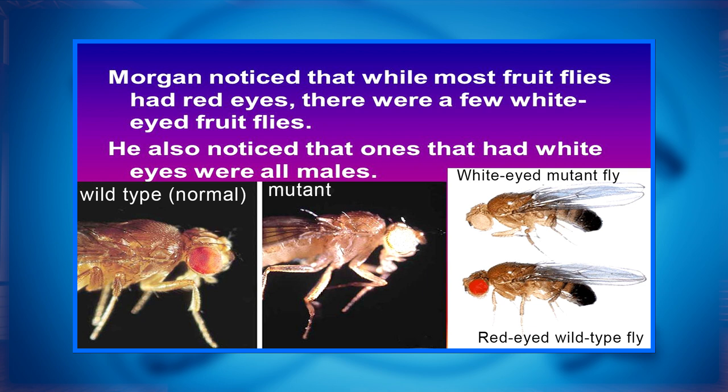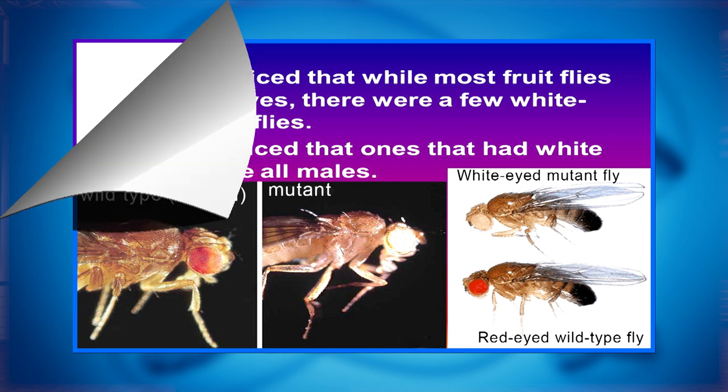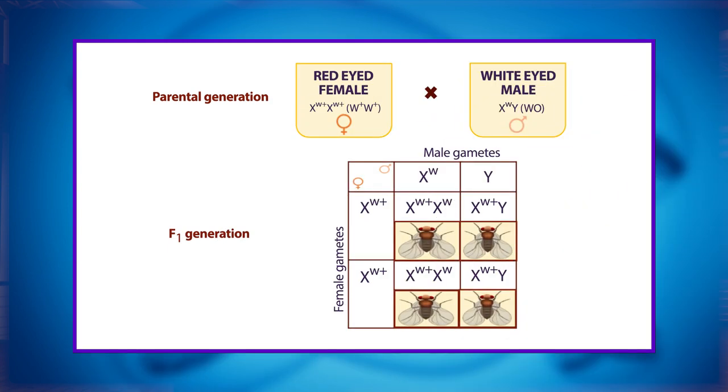Fruit flies have three pairs of autosomes and a pair of sex chromosomes. At that time, Morgan already knew that X and Y had to do with gender. He used normal flies with red eyes and mutated flies with white eyes and crossbred them. In flies, the wild type eye color is red (X^W) and is dominant to white eye color (X^w). He was able to conclude that the gene for eye color was on the X chromosome. This trait was thus determined to be X-linked and was the first X-linked trait to be identified. Males are said to be hemizygous in that they have only one allele for an X-linked characteristic.